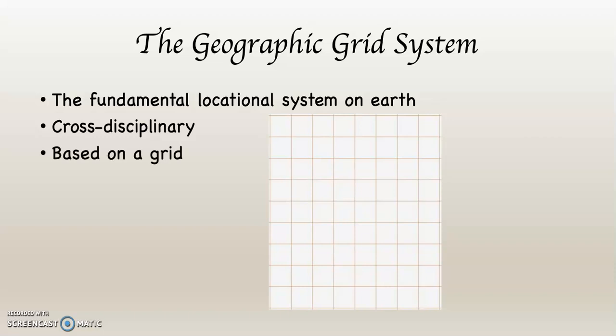It's based on a grid. Generally, with a grid, we have two components, X and Y, like X2, Y7. We plot those and put a dot there. In this case, the geographic grid is based on latitude and longitude. We're going to build a grid system on the surface of the planet that allows us to locate places on Earth.